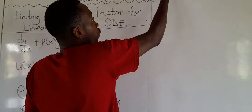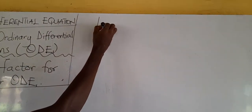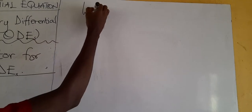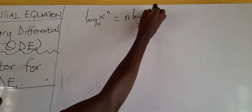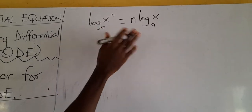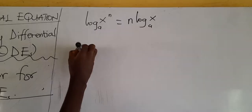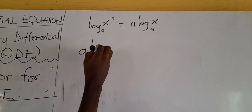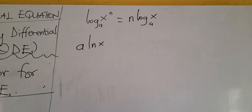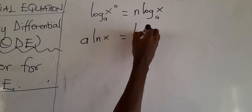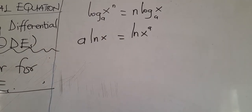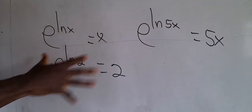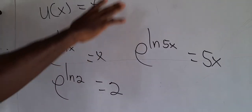We also have the log law of indices: if we have ln(x^n), it equals n·ln(x). So if I have ln(x), I can rewrite this as ln(x^1). With these rules — the exponential meeting the ln function — we have no problem in finding the integrating factor.